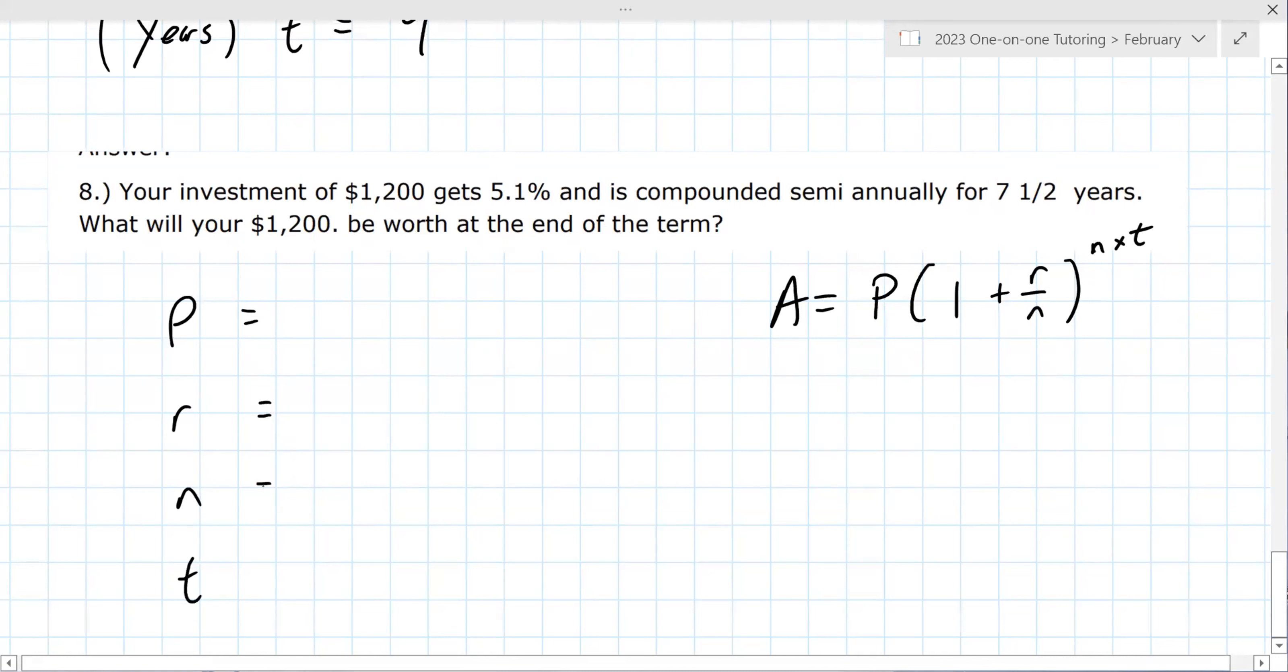Take a look at this one. Go ahead and label or write down whatever you see. Okay, so for P I got 1,200, and then r I got 0.051, and then n I got 2, and then t I got 7.5. That's right. Now I recommend writing your formula out before you go to the calculator. Also helps to show work to your teacher. They have a better feel that you understand how to do it.